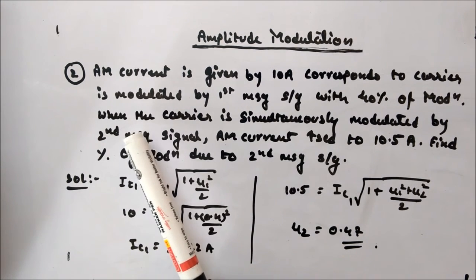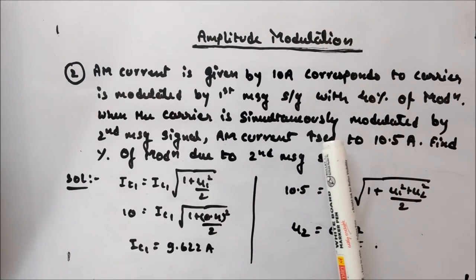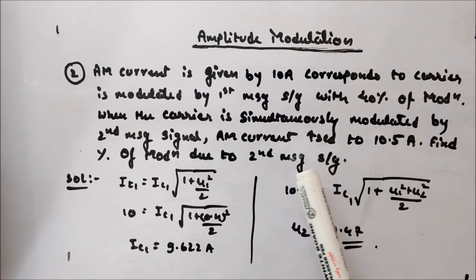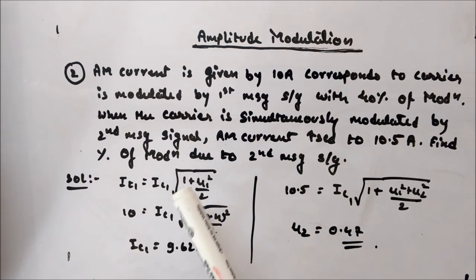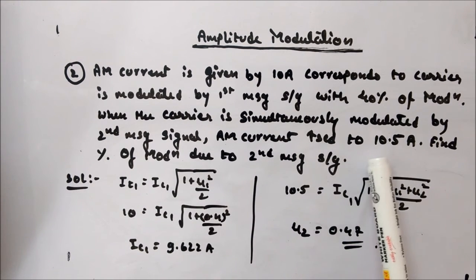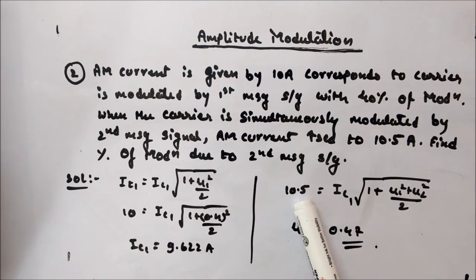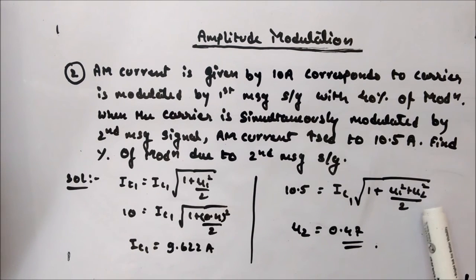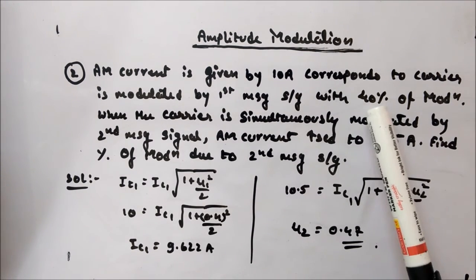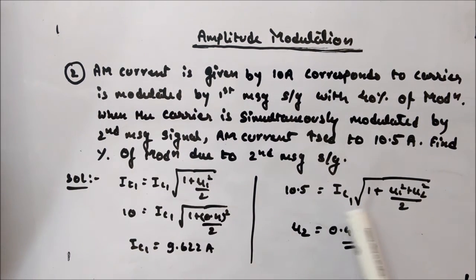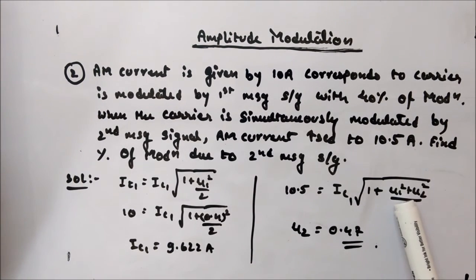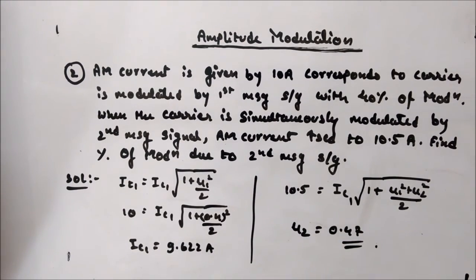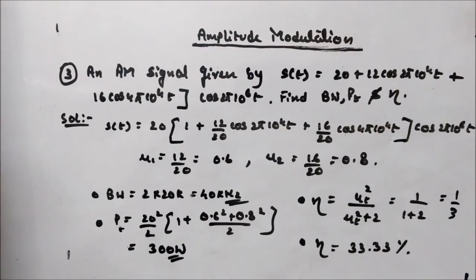From the second condition, when the carrier is simultaneously modulated, IT = 10.5 A. Applying the current relation IT = IC·√(1 + mu1² + mu2²)/2) with IC = 9.62 A, IT = 10.5 A, and mu1 = 0.4, you can solve for mu2. Plugging in the values gives mu2 = 0.47, which is approximately 47% modulation.